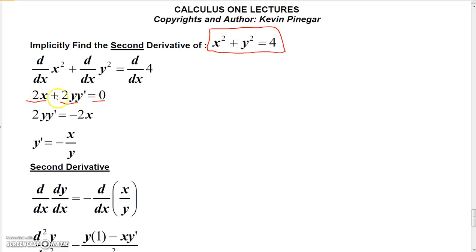Now, if you move the 2x over, you get 2yy prime equals minus 2x. And then if you divide both sides by 2y, the 2s will cancel and you just get minus x over y. So that's the first derivative.